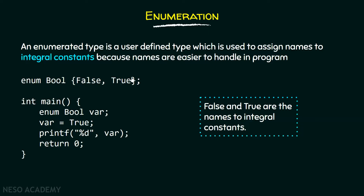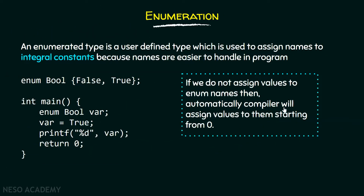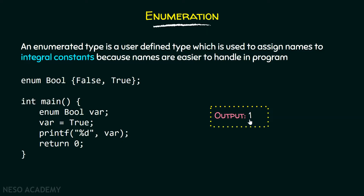Here, you write bool and within these curly braces, you mention all those names for integral constants, followed by a semicolon at the end. If we do not assign values to enum names, then automatically the compiler will assign values to them starting from zero. This means that false will get value zero and true will get one. So, we have declared a variable of type enum bool which can store either false or true. Here we are storing true, which means it is actually storing value one, and if we print this out on the screen, we will get the output one.